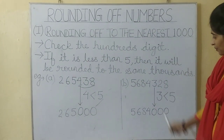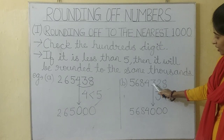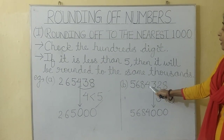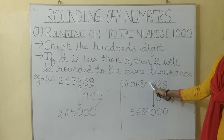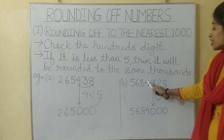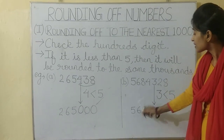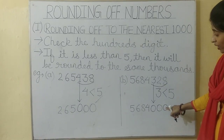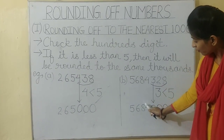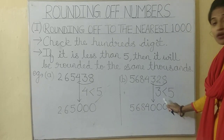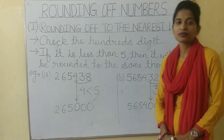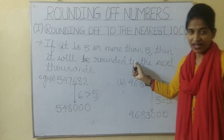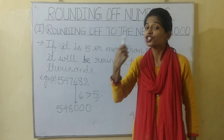Second example. Here also the hundreds digit is 3, and 3 is less than 5. So the thousands digit will remain the same — it will be rounded to the same thousand. The last three digits will become 0, 0, 0. So the answer will be 568000.